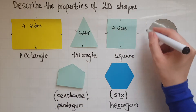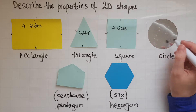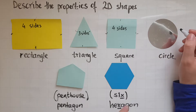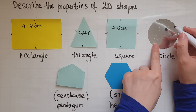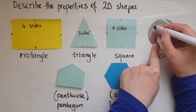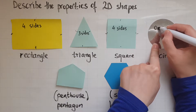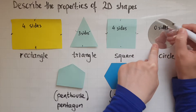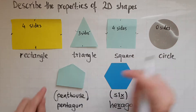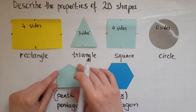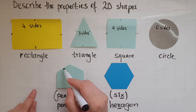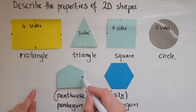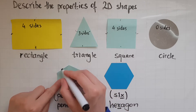A circle, since it's not a straight line, it has no sides. So zero sides. A pentagon has one, two, three, four, five.